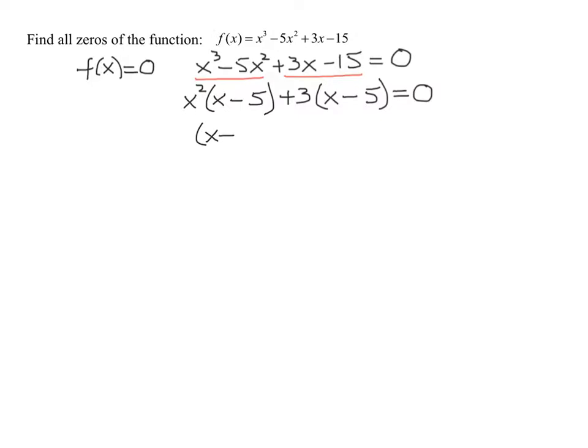So I pull out my common binomial factor and what's it going to leave from the first term? x squared, from the second one plus three. So it's going to leave you with x squared plus three.